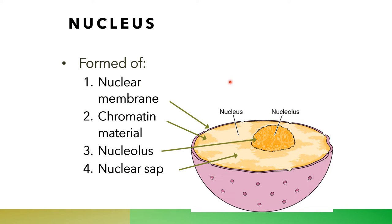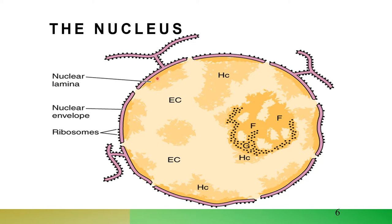The nucleus is formed of four components: the nuclear membrane that surrounds the nucleus; the chromatin, which contains DNA carrying genetic information; the nucleolus, which is responsible for production of RNA; and the nuclear membrane. The nuclear membrane appears to be formed of two layers fused together at certain intervals, making the nuclear pore, which allows passage of substances from outside to inside the nucleus and vice versa.